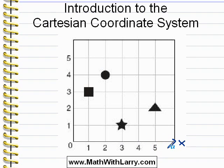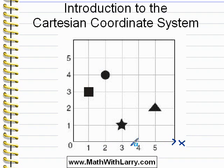I've stopped at five for this example, but if we needed to, we could keep going. We also don't have to number the lines in this way. If it was more to our advantage, we could number them 10, 20, 30, 40, or we could do 2, 4, 6, 8 — whatever makes sense for the particular example that we're working with.